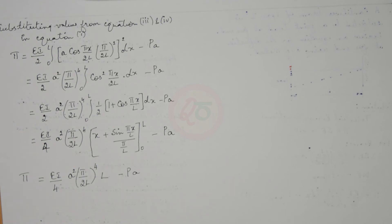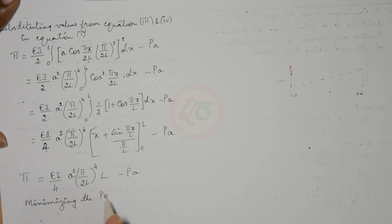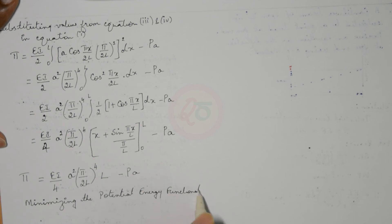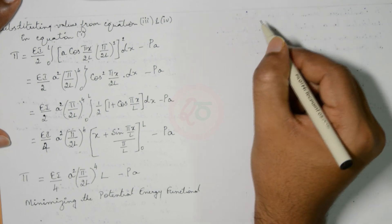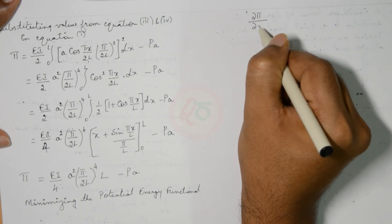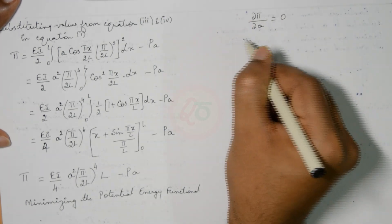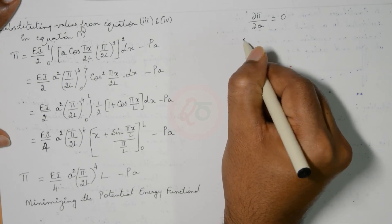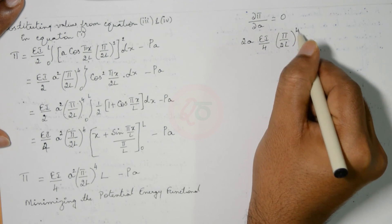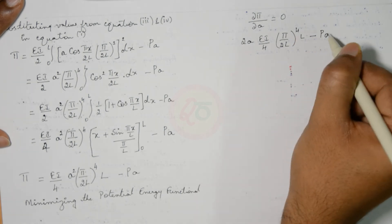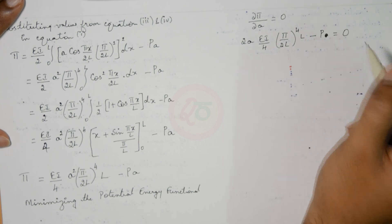The next step is to minimize the potential energy functional. To minimize, we set dπ/da equals 0. Differentiating with respect to a: 2a·(EI/4)·(π/2L)⁴·L minus P equals 0, which gives a·(EI/2)·(π⁴/16L⁴)·L equals P.